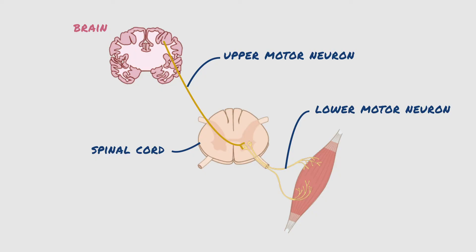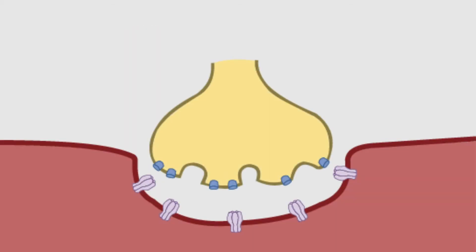From here, the action potential is sent through an axon down to its ending branches, called axon terminals, to muscle fibers which they innervate. Now, let's take a closer look at the neuromuscular junction.